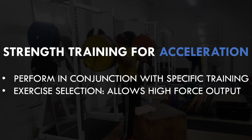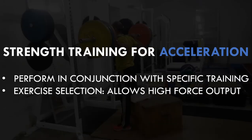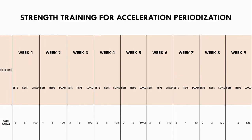Periodization of strength training for acceleration should follow a linear periodization model, meaning that over time the loads are increased and the reps performed decrease. For example, a nine-week periodized program may look something like this: we start with higher reps and lighter loads and transition into lower rep strength training with heavier loads. This will allow the highest force to be produced at the time we need to be at our peak.